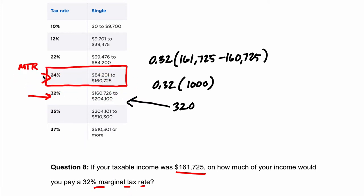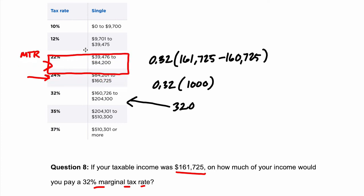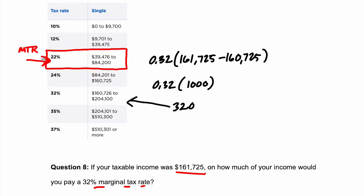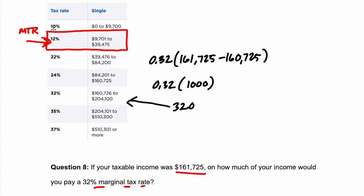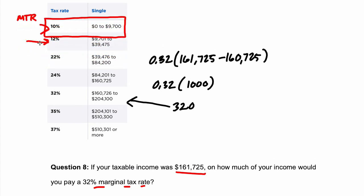You'll pay 24% on all the income that fits in that bracket, which is from $84,200 all the way up to $160,725. Then you're going to pay 22% on all the money in the bracket below that, and so on and so forth. You pay these marginal percentages all the way down until the very last dollar, and you're only paying 32% on the top portion of your taxable income.